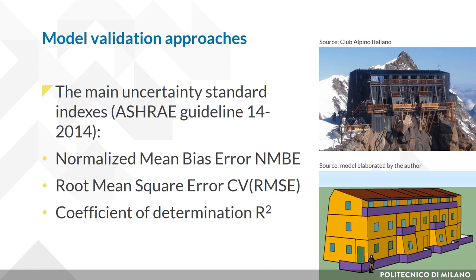Coefficient of Variation of the Root Mean Square Error (CV-RMSE) — measures the variability of the error between measured and simulated values, giving an indication of the model's ability to predict the overall load shape. Values below 25% indicate a good model fit with acceptable predictive capabilities. Coefficient of Determination (R²) — indicates how close simulated values are to the regression line of the measured values. The value is limited between 0 and 1, where the upper value means that the simulated data match the measurements perfectly.